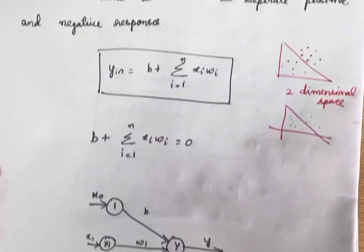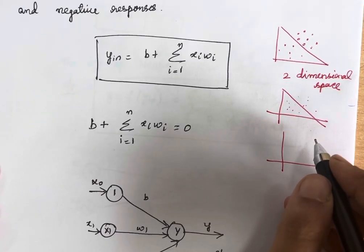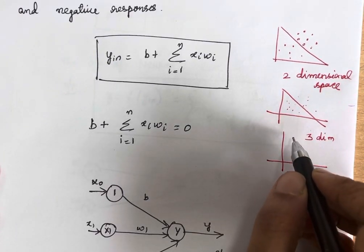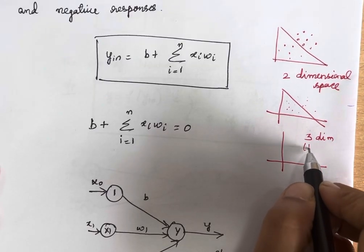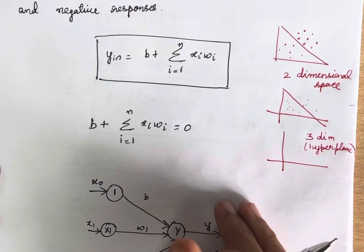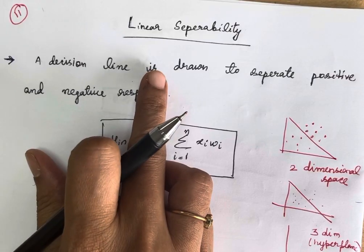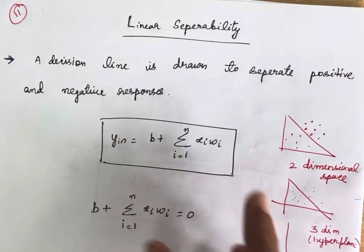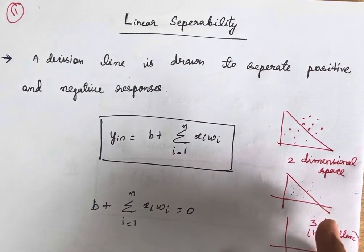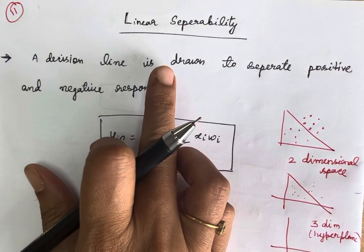This is called linear separability — you have to do it in two-dimensional space. Suppose if you are going to take an n-dimensional space, or otherwise three-dimensional space, you have to draw a hyperplane which will separate the points from the positive region and the negative region. That is called linear separability. Using a decision line or boundary, you are going to separate the positive and the negative responses.